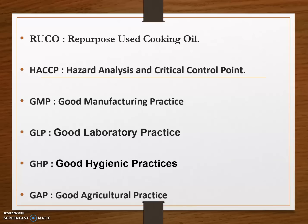Next is GMP, which means Good Manufacturing Practice. Good Manufacturing Practice is a system for ensuring that products are consistently produced and controlled according to quality standards. GMP is designed to minimize the risk involved in any pharmaceutical production that cannot be eliminated through testing the final product.